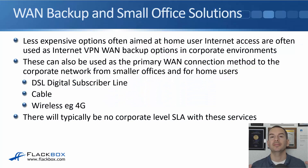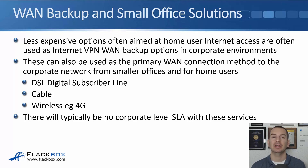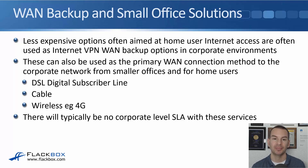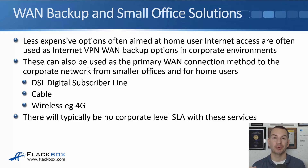In this lecture, you'll learn about PPPoE, the Point-to-Point Protocol over Ethernet. In earlier lectures in the section, you learned about the different WAN options that a large company, a large office, would use for their WAN and their Internet connectivity. Less expensive options, which are often aimed at home users, are often used as Internet VPN WAN backup options in those corporate environments. They can also be used as the primary WAN connection method to the corporate network from smaller offices and for home users.